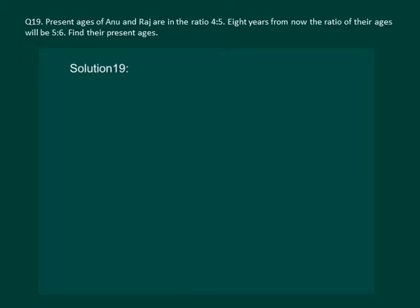Let us read the question. Present age of Anuj and Raj are in the ratio 4 is to 5. 8 years from now the ratio of their ages will be 5 is to 6. Find their present ages.